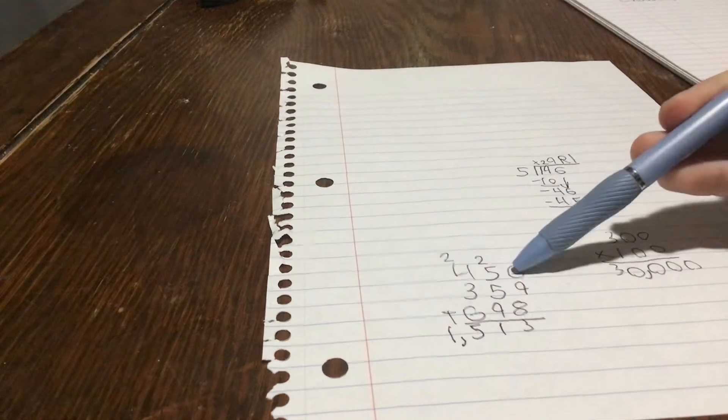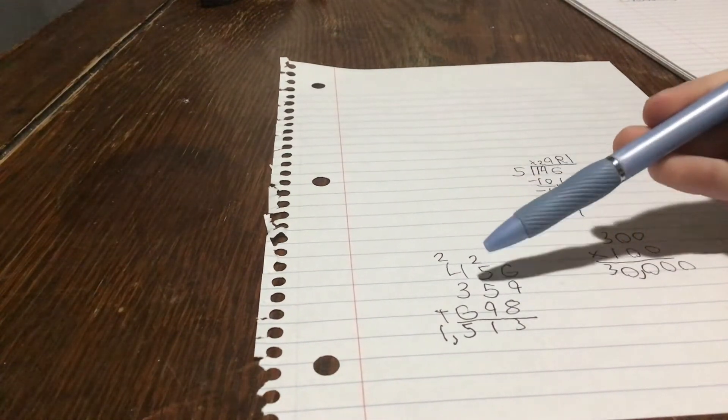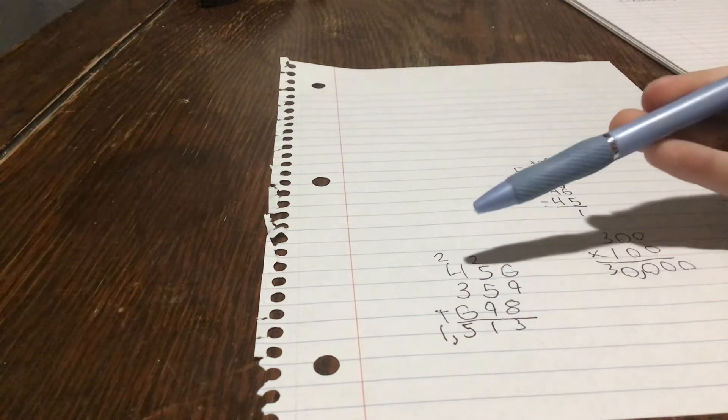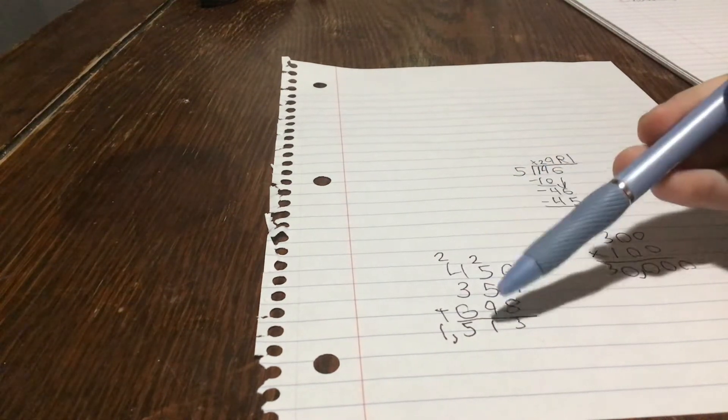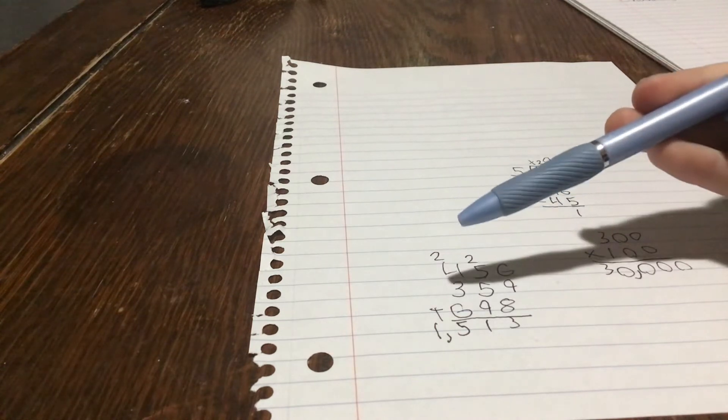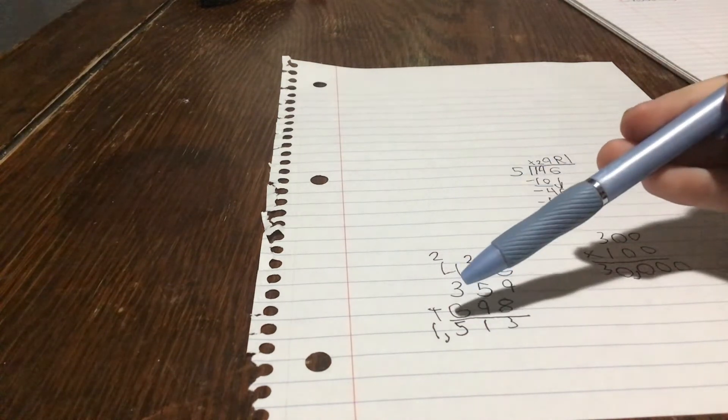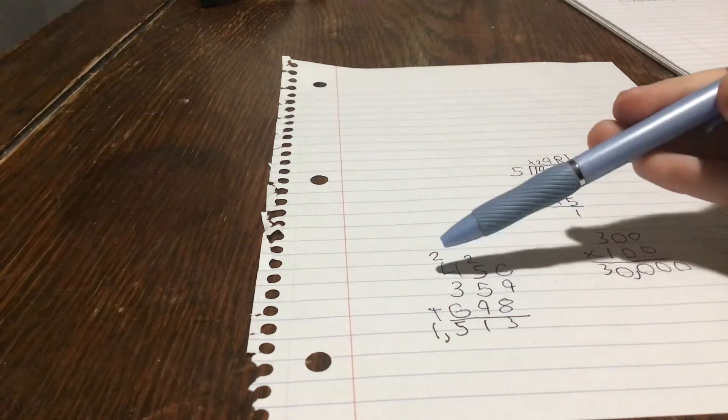Alright, now let's do 6 plus 9 plus 8, which equals 23. Now let's do 5 plus 5 plus 9 plus 2, which equals 21.